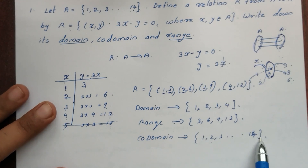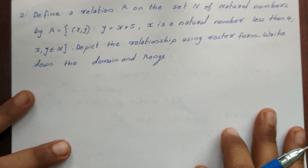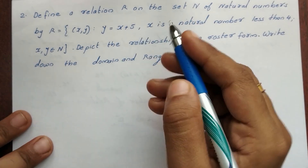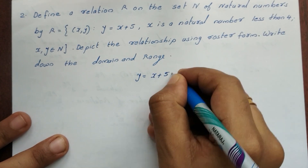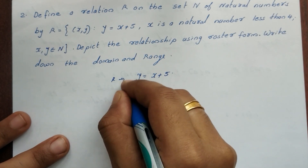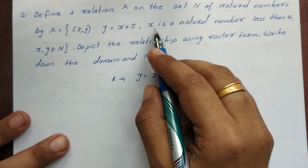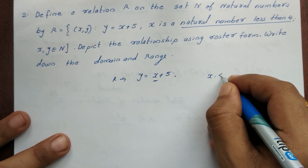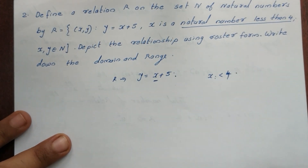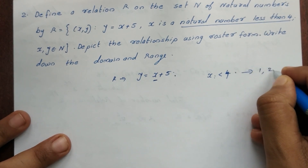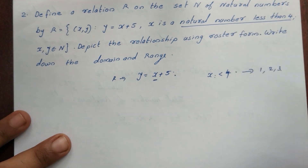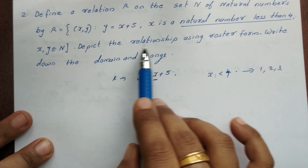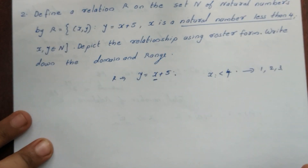Second question: Define a relation R on the set N of natural numbers by R = the set of all ordered pairs (x, y) such that y = x + 5, where x is a natural number less than 4. Depict the relation using roster form and write down the domain and range.